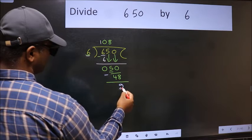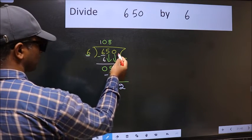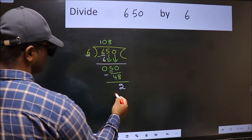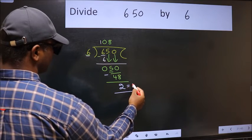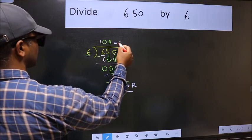We get 2. No more numbers to bring it down, so we stop here. This is our remainder and this is our quotient.